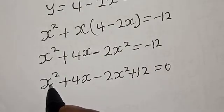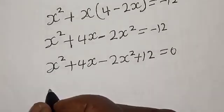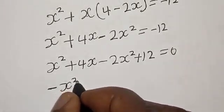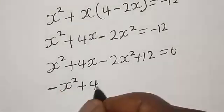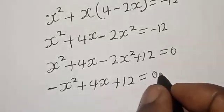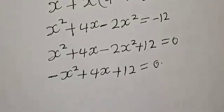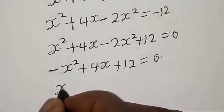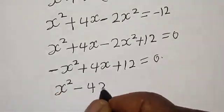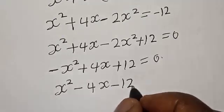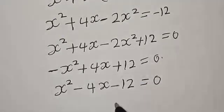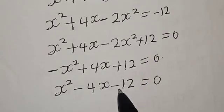Then we have x squared plus 4x minus 2x squared plus 12 is equal to 0. Now here is x squared and this is minus 2x squared. If you subtract x squared from minus 2x squared, we have minus x squared plus 4x plus 12 is equal to 0. Then multiplying through by minus 1, we have x squared minus 4x minus 12 is equal to 0.